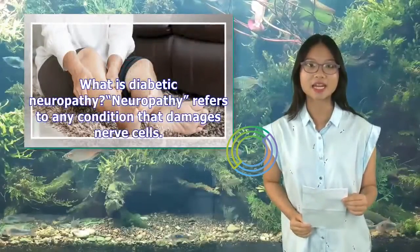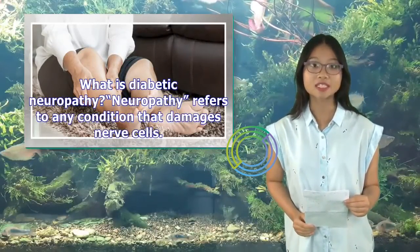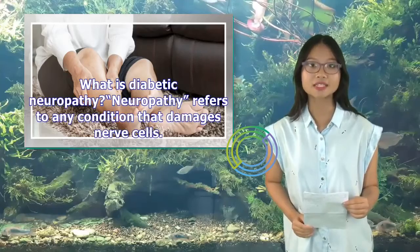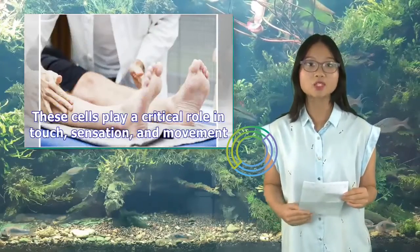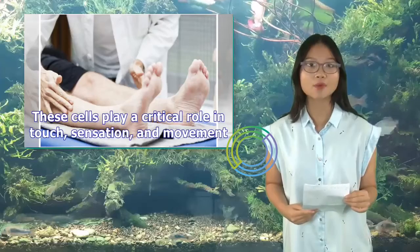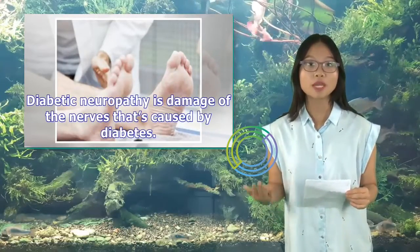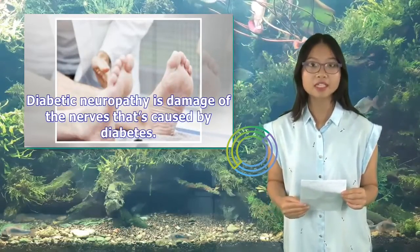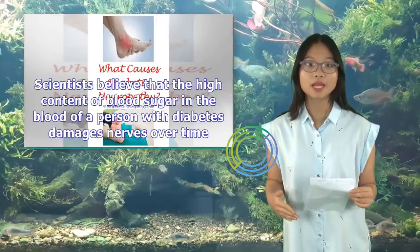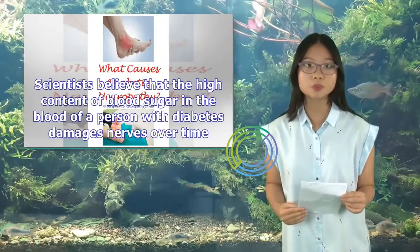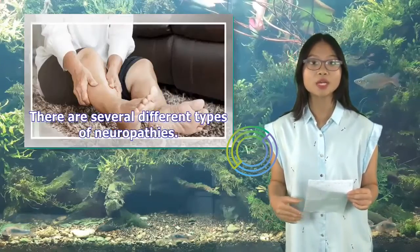What is diabetic neuropathy? Neuropathy refers to any condition that damages nerve cells. These cells play a critical role in touch, sensation, and movement. Diabetic neuropathy is damage of the nerves that's caused by diabetes. Scientists believe that the high content of blood sugar in the blood of a person with diabetes damages nerves over time.